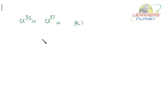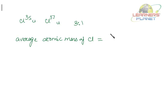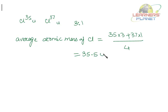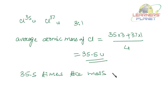Take chlorine, which has two isotopes: Cl-35 and Cl-37. These exist in the ratio of 3:1. So the average atomic mass of chlorine = (35 × 3 + 37 × 1) / 4, which comes out to be 35.5 u.